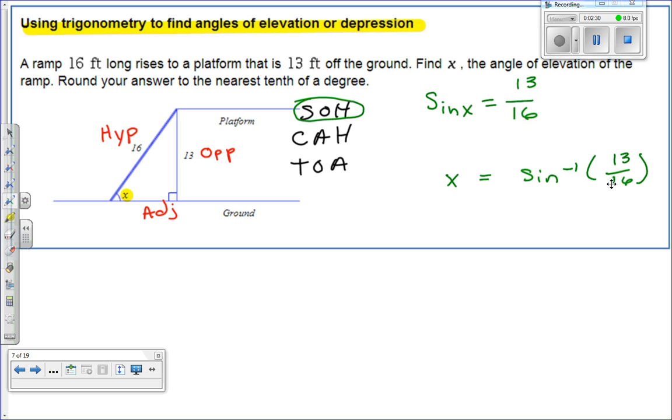Because when you do the sine inverse on both sides, it undoes the sine. So this guy's gone, and you're just left with x. So x equals the sine inverse of this.